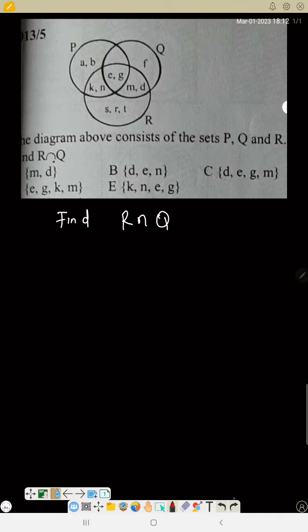This place is R intersection Q, the shaded region. So that means R intersection Q is E, G, M, D.